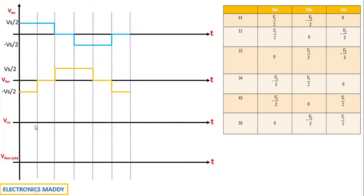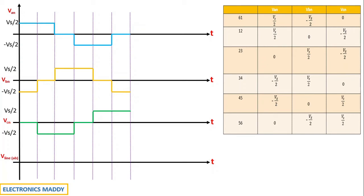For Vcn, it initially starts at 0, then goes to minus Vs/2, remains at minus Vs/2, then returns to 0, then rises to plus Vs/2, and remains at plus Vs/2. So Van, Vbn, and Vcn are straightforward to analyze from the table.